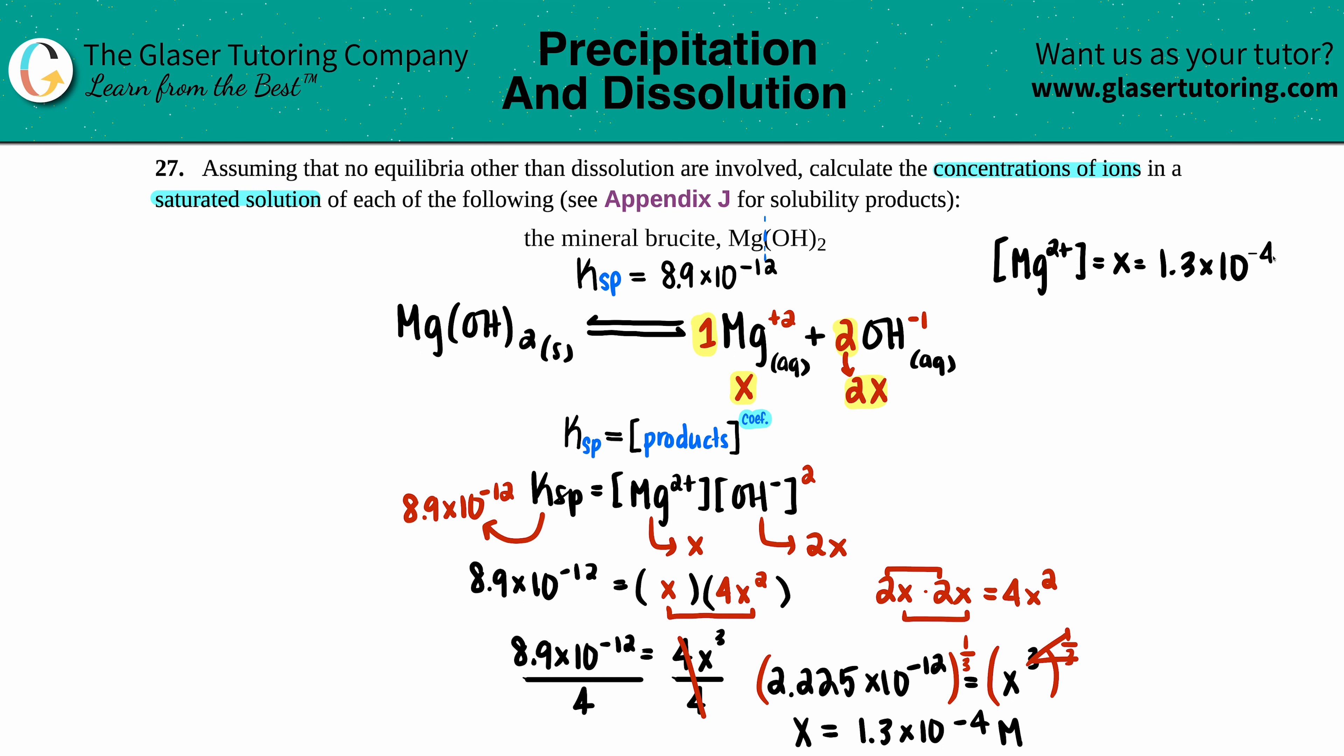For the hydroxide, we labeled it as 2x, so I have to plug in 1.3 times 10 to the negative 4th and multiply it by 2. When I do that, I get 2.6 times 10 to the negative 4th molarity. Those are your two answers—there's that one, there's this one—and now we are officially done.